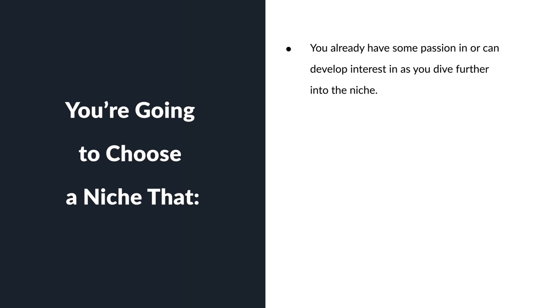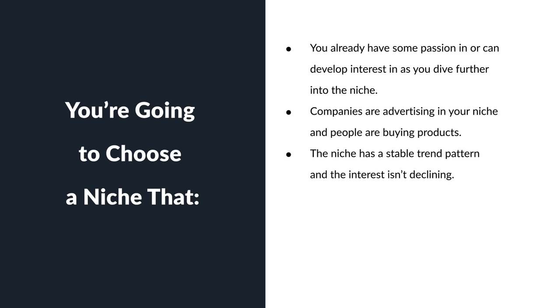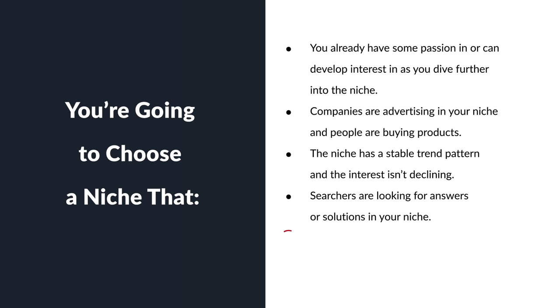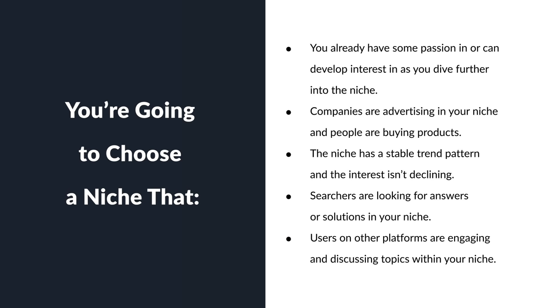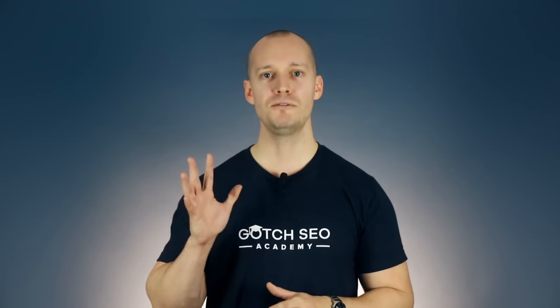So just to review, you're going to choose a niche where: number one, you already have some passion in or can develop interest in it; number two, companies are advertising and people are buying products; number three, the niche has a stable trend pattern and the interest isn't declining; number four, searchers are looking for answers in your niche — in other words, there's search volume in Google; and number five, users on other platforms are engaging and discussing topics within your niche. This five-step vetting criteria should help you narrow down your list to at least your top five.